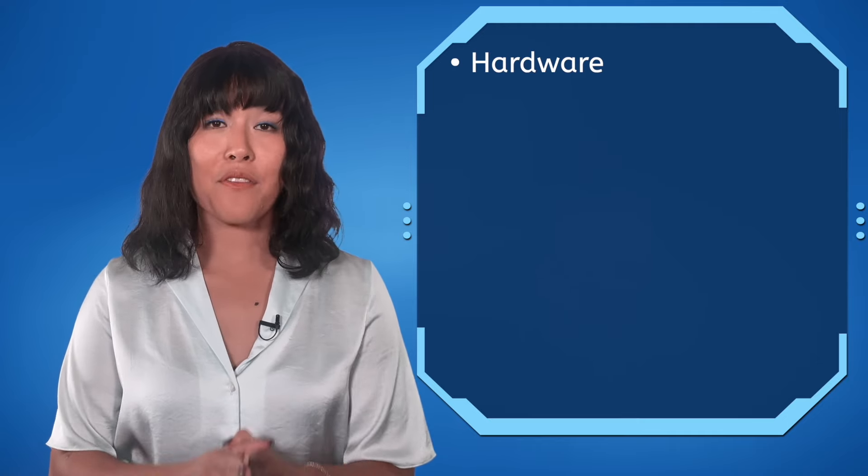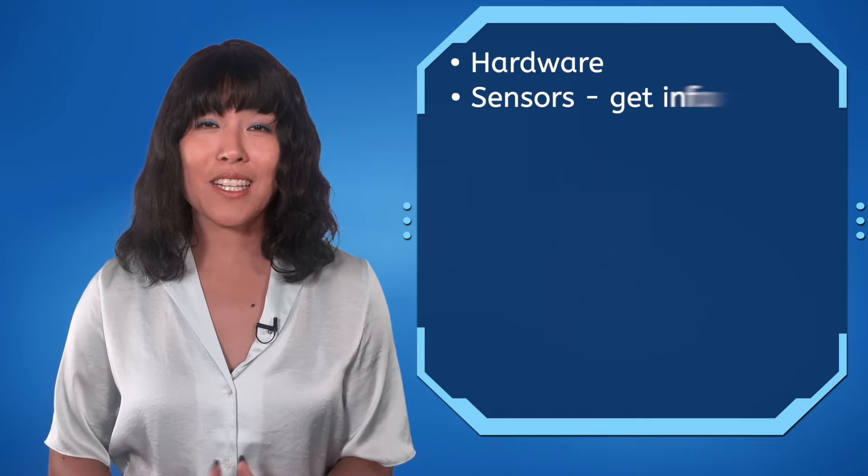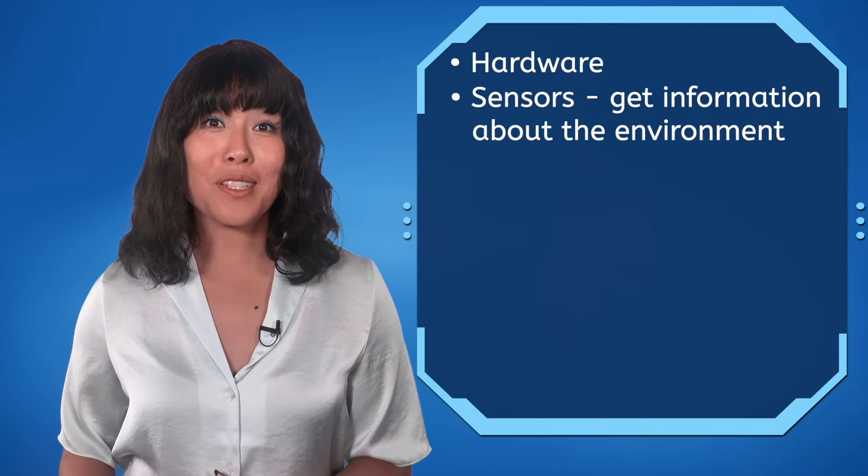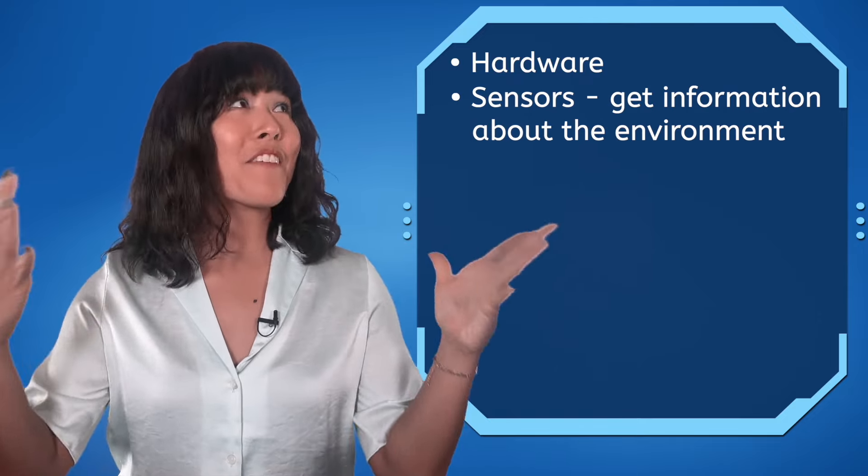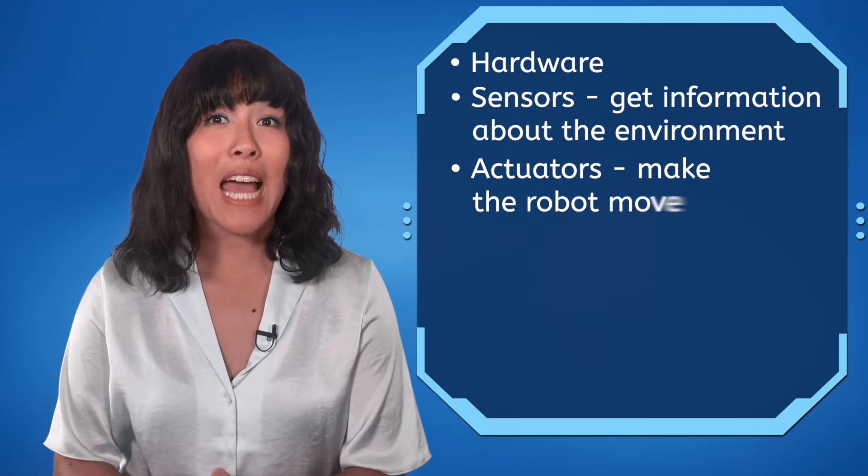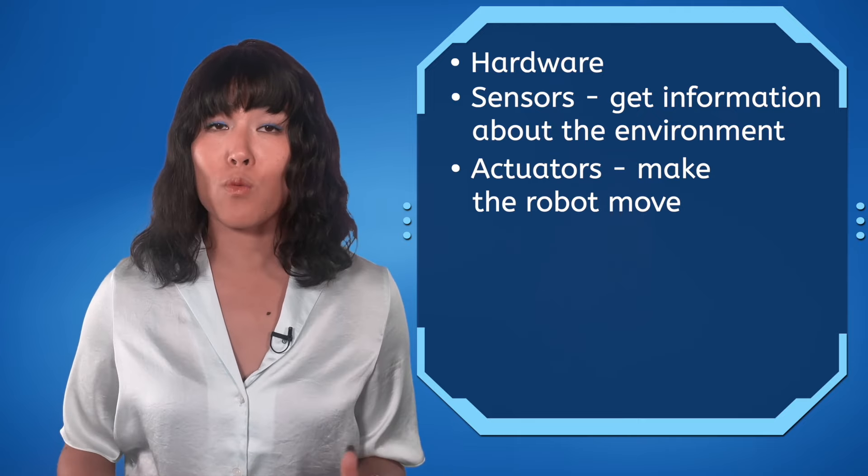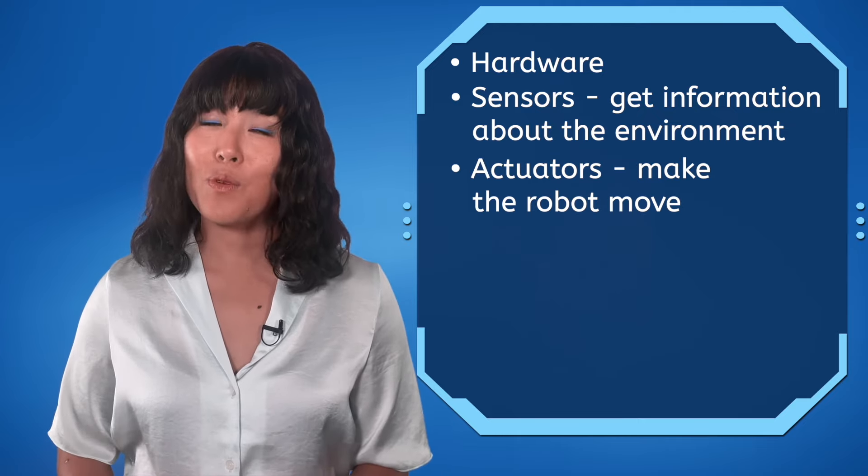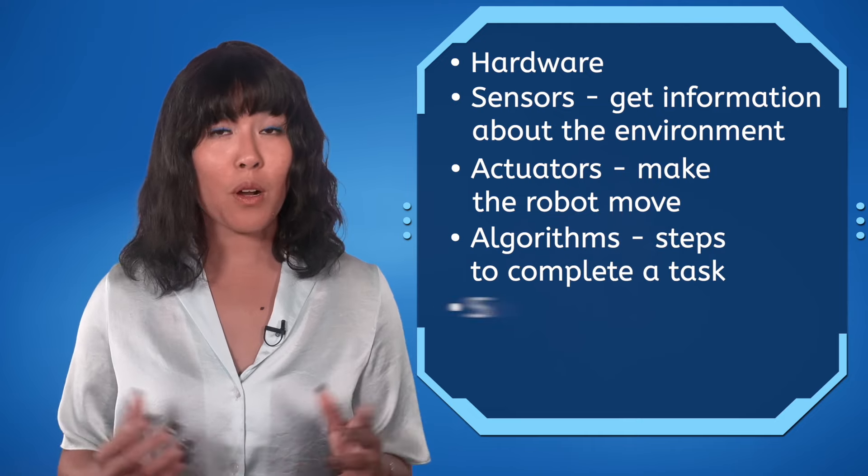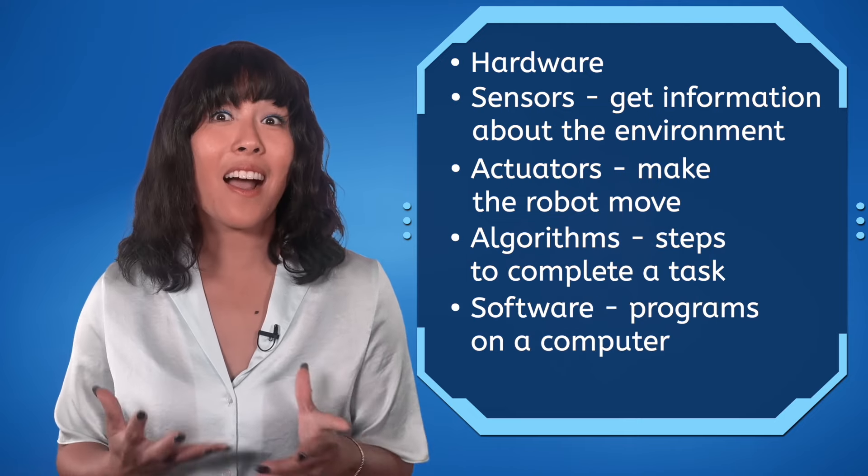First, we made sure to have the correct hardware, the physical parts of the robot. This included sensors, tools that get information about the environment. We also used actuators or devices to make the robot move. Lastly, we write the algorithm, which is part of the software programs that guide the robot.